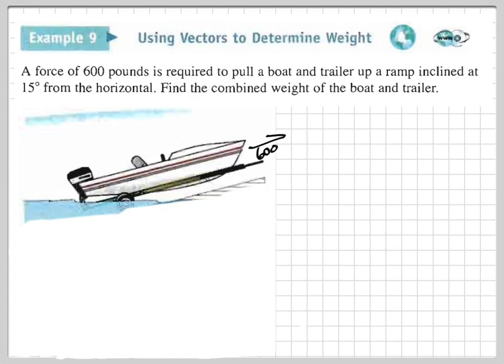But that's not what we're looking for. The problem is asking for what the combined weight of the boat and trailer are. Now, if we were to consider that, weight is a vector that just goes straight down. So we're looking at what is the weight of the boat and the weight of the trailer when it takes 600 pounds to pull the boat forward.